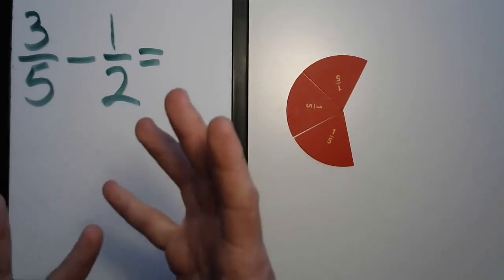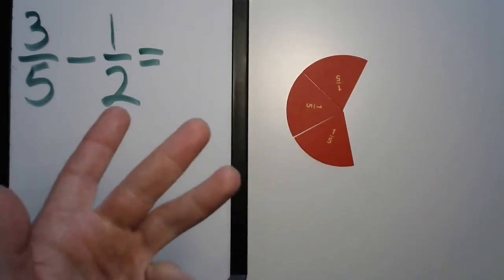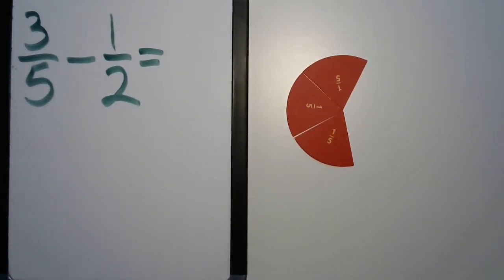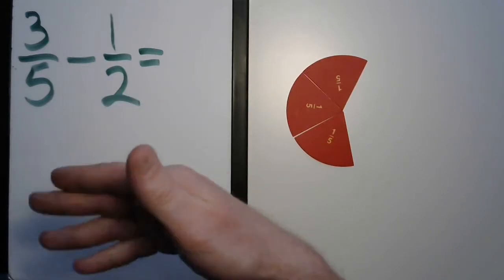And if we think about the common multiples of both two and five, two, four, six, eight, ten, twelve, fourteen, it keeps going, and five is five, ten, fifteen. You heard ten for both five and for both the half, for twos.